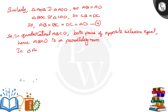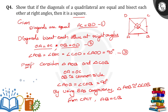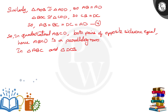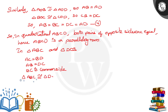Now we consider triangle ABC and triangle DCB. In these two triangles: AC is equal to BD since the diagonals are equal, AB is equal to DC, and BC is the common side. Therefore triangle ABC is congruent to triangle DCB by SSS congruency.